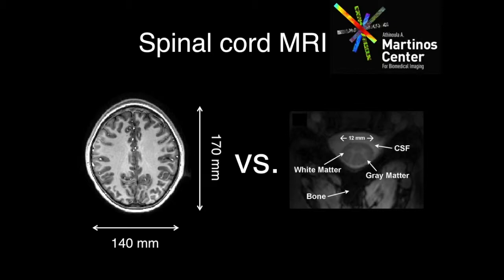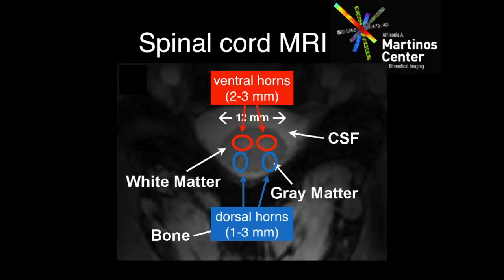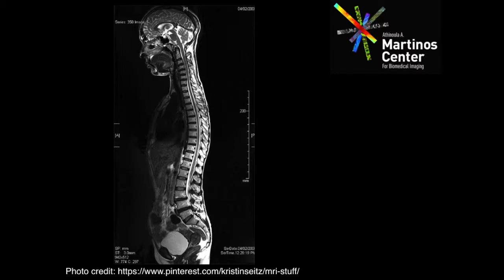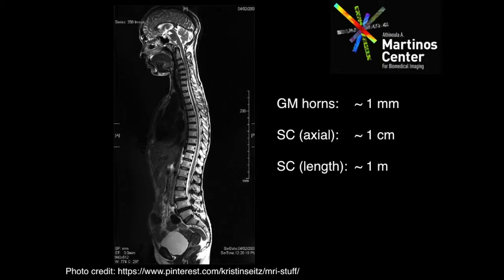If I overlay a typical spinal cord onto the brain, that's how big it is — on the level of the cortical ribbon. We're looking at very, very small structures. The ventral horns, which are the gray matter, are about two to three millimeters in size, and the dorsal horn is about one to three millimeters. If you think about the whole spinal cord: the gray matter horns are about a millimeter, the axial size is about a centimeter, and the rostral-caudal extent is on the order of a meter. Whereas the brain is roughly a ball of water, we're dealing with something that looks more like a hockey stick — and these are not favorable dimensions with which to image.